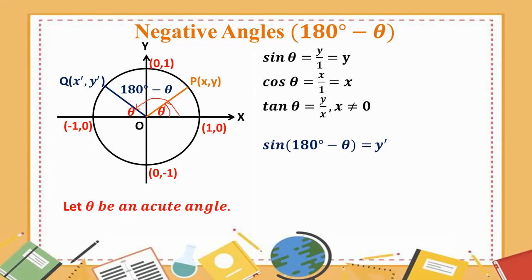Sin 180 degrees minus θ. The answer is sin 180 degrees minus 3. This is the key result for the sine of a supplementary angle.